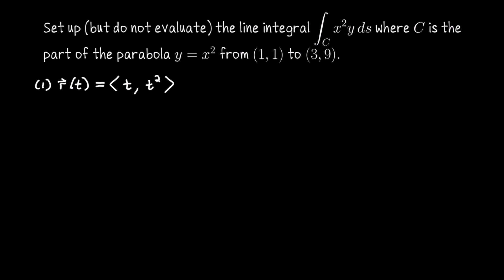So ⟨t, t²⟩ is a way of parametrizing the parabola y = x². If we're going from (1,1) to (3,9), that's like having x go from 1 to 3, but I just switched letters to call it t, so t is going to go from 1 to 3.